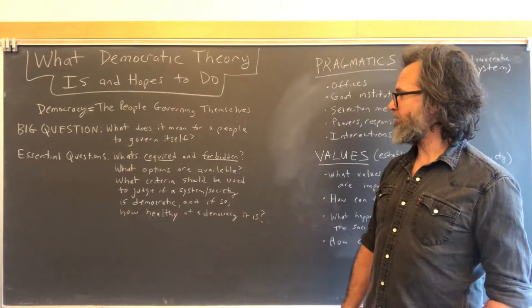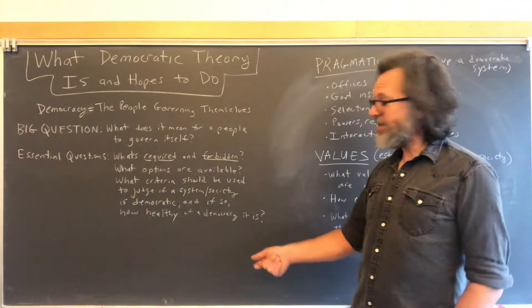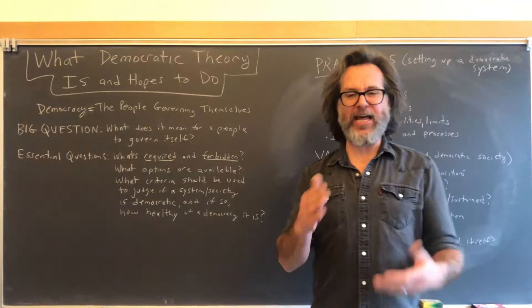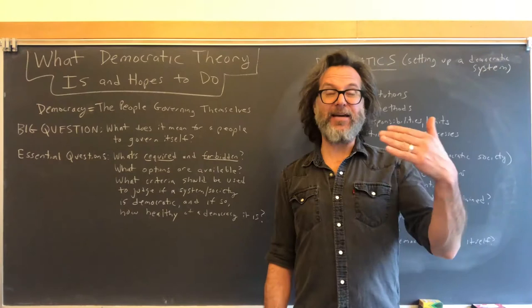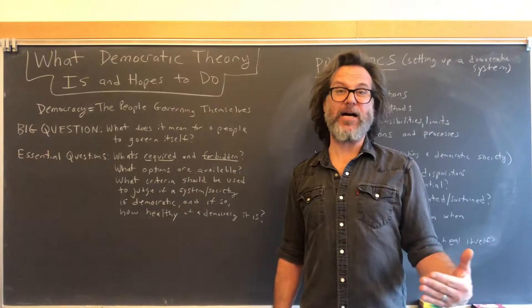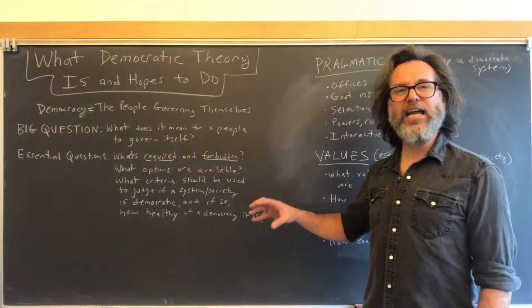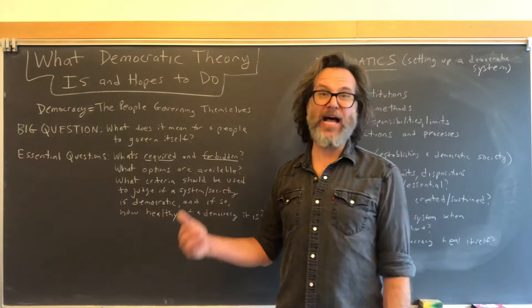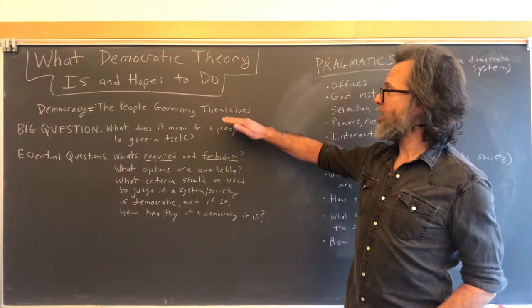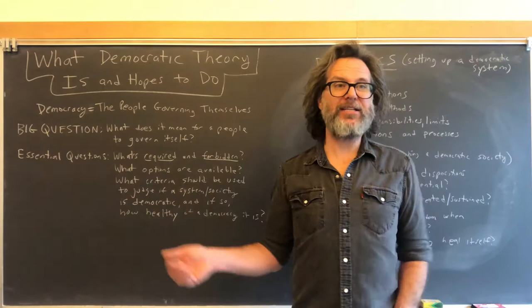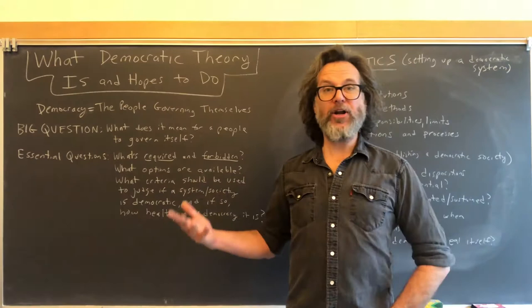Just as important: what criteria should be used to judge if a system and a society is democratic? How do we know? How do we tell? If it is democratic and hits our criteria, we also want to evaluate the relative health of that democratic society. Is it a democracy on paper, but is it a vital, living, healthy one? The essential questions create finer-grain, more certain boundaries, and a big part of democratic theory is elaborating these boundaries and explaining why they reference back to the people governing themselves.